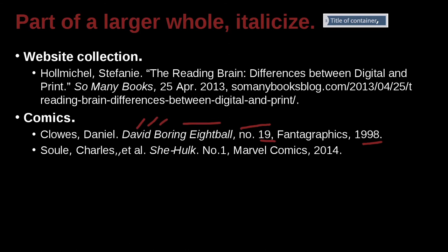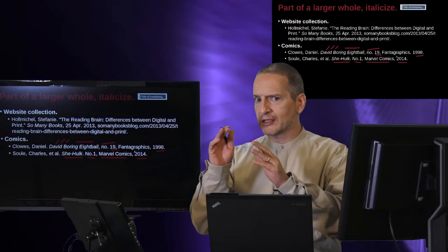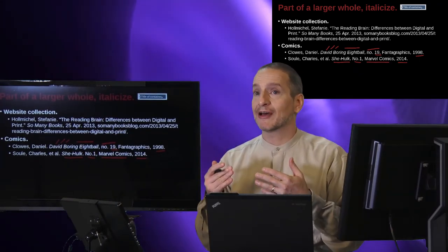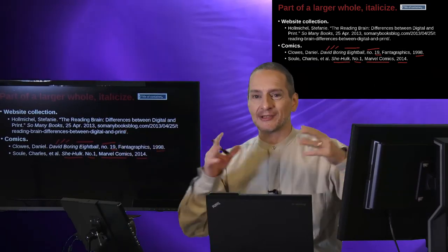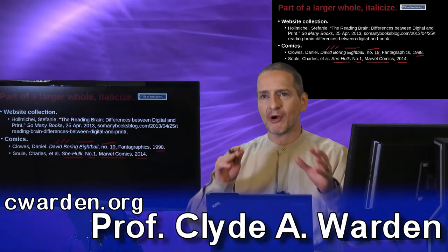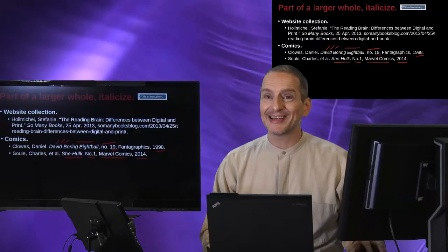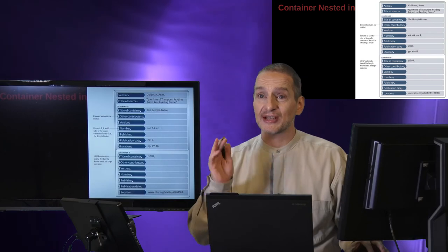Charles et al. — so this must have three or more authors. The comic's name is She-Hulk. This is not a chapter, but a comic, and this comic is one out of many that come out — this is number one, the year is 2014, and the publisher is Marvel Comics. So it's kind of like your journals, very similar to journals, only you don't have an article and a journal because it's a comic. Individual comics don't have names — Superman is just Superman, Batman is just Batman. Although there are different series, so you could be using different series names too. I doubt you're going to be citing comics in your research, unless your research is about comics, which actually sounds like interesting research.